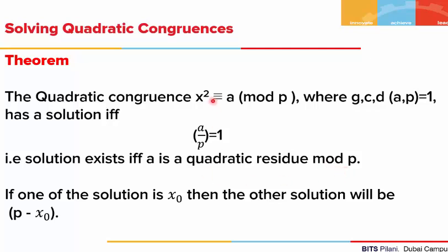If such a congruence has one solution X₀, then the other solution will be P minus X₀. So if the solution exists, there will always be two solutions.